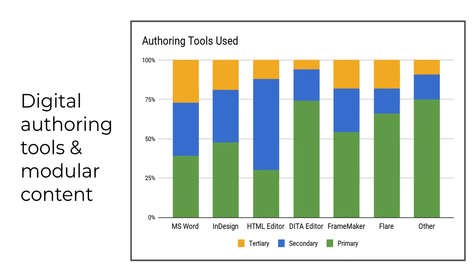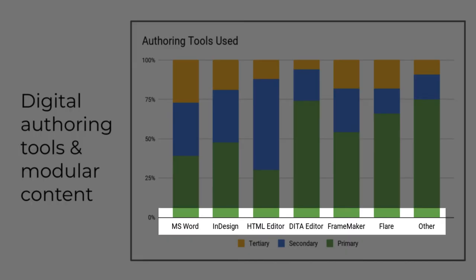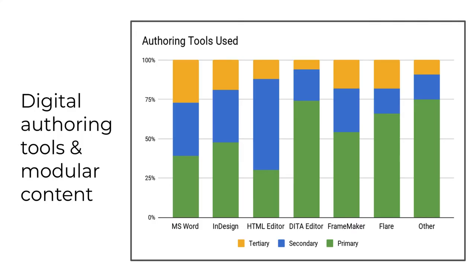I'll begin by showing you the results from a survey conducted by CIDM — the Center for Information Development Management. The graph displays the authoring tools that TechCom professionals said they were using in 2016. I want you to notice that the most commonly used primary tools — DITA, Flare, and some versions of FrameMaker — all support topic-based or modular content, meaning they allow companies to reuse content. This is why TECM 5191 teaches you about HTML, DITA, and Flare.